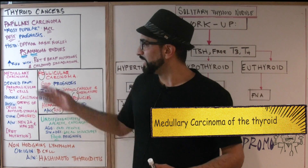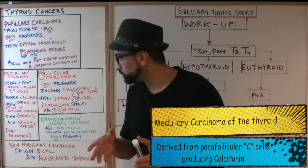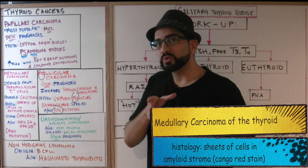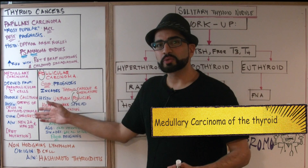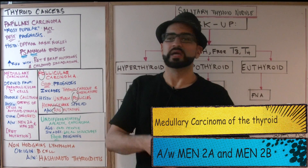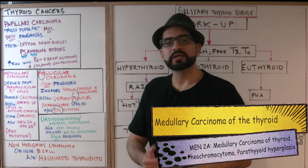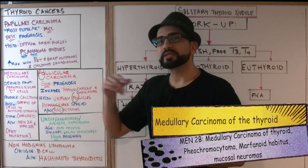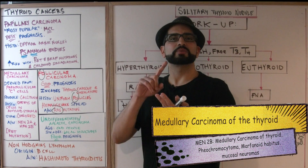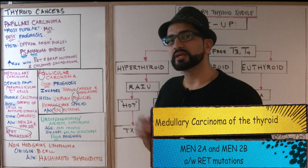The next one is medullary carcinoma of the thyroid. It is derived from the parafollicular C cells, which make calcitonin, so high levels of calcitonin will be seen. On histology, you've got sheets of cells and amyloid stroma, and on staining it stains Congo red — Congo red stains the amyloid. Medullary carcinoma is associated with MEN2A and MEN2B. MEN2A includes medullary carcinoma of the thyroid, pheochromocytoma, and parathyroid hyperplasia. MEN2B includes pheochromocytoma, medullary carcinoma of the thyroid, marfanoid habitus, and mucosal neuromas. Both MEN2A and MEN2B associate with RET mutations.